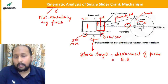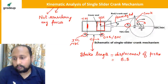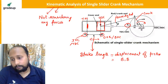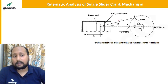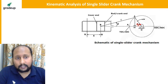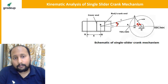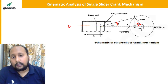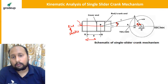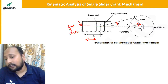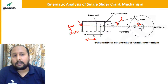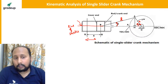The stroke length equals twice OA — the diameter of the crank. There is an angle theta which the crank makes, and beta is the angle made by the connecting rod with the line of stroke. The line of stroke is the line along which sliding occurs. L is the length of the connecting rod and r is the radius of the crank.